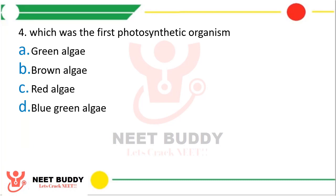Question 4: Which was the first photosynthetic organism? Option A green algae, option B brown algae, option C red algae, or option D blue-green algae. The correct answer is option D — blue-green algae was the first photosynthetic organism.